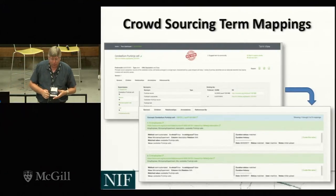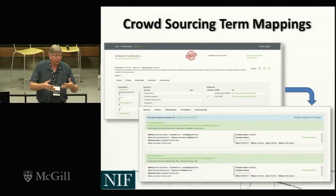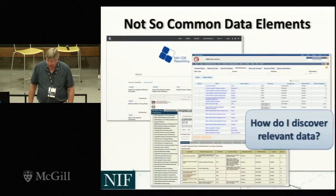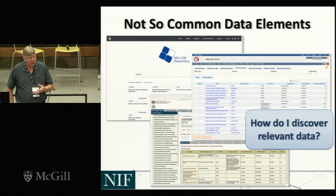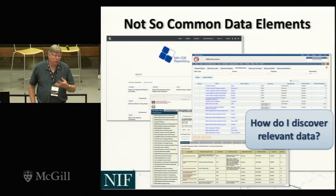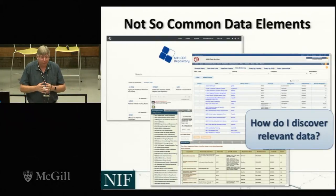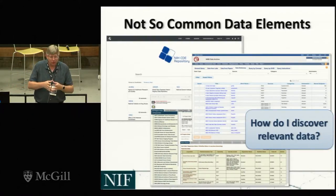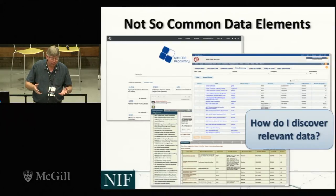Trying to aggregate this information across the community and make it publicly available is important. This is something that's done many times by many different people. In addition to terms, a lot of what we're dealing with is common data elements, especially when trying to find data that exists. Common data elements are actually not so common — you go to different repositories and there are hundreds of thousands of them, sometimes duplicates representing the same thing. For example, there are more than 12 different instruments to check handedness, probably many more.